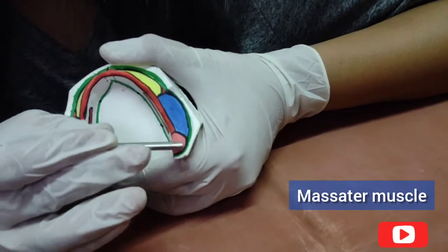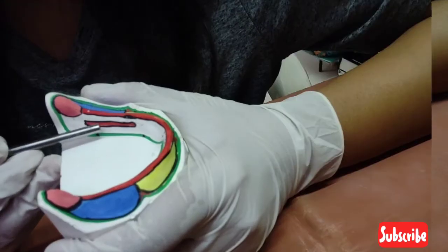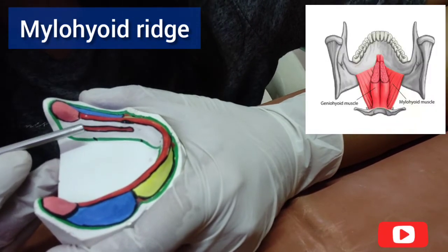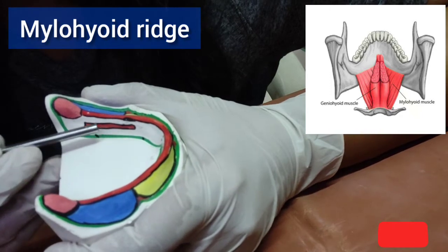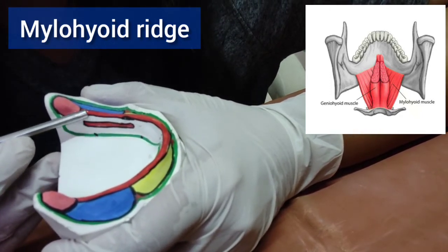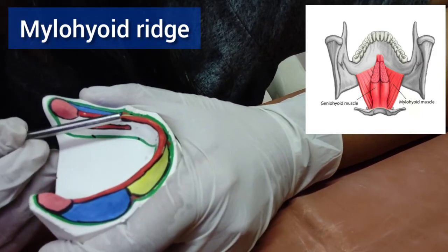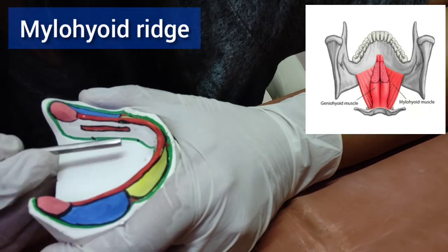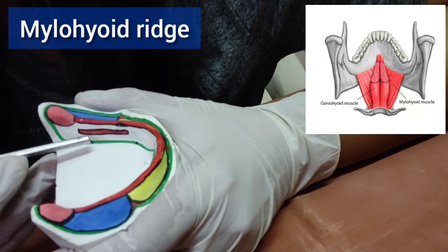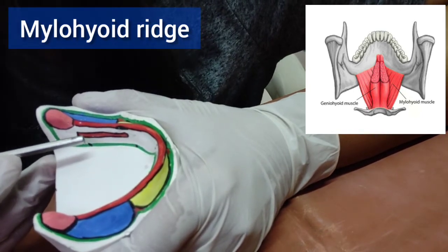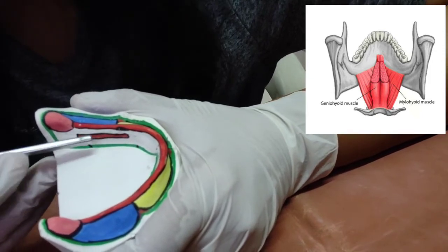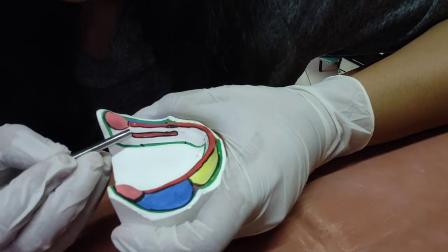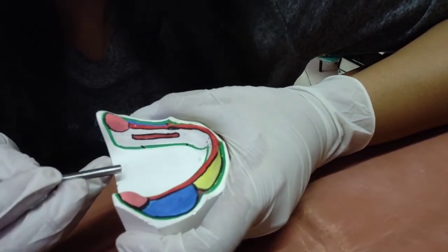A proper recording of this area is essential during border molding. The mylohyoid ridge provides the origin of the mylohyoid muscle. The distal end of the ridge is closer to the crest, and the anterior aspect is closer to the lower border. It is important to determine the prominence and sharpness of the mylohyoid ridge — a prominent ridge can seriously interfere with development of a correct lingual flange, and a sharp ridge may cause pain especially during mastication. An anatomically important ligament attaching on the distal end of the mylohyoid ridge is the pterygo-mandibular raphe.